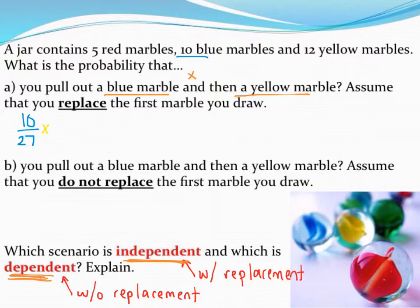I'm going to multiply that by the probability of getting a yellow marble. Well, there's 12 yellow marbles. There are still 27 in the jar because I've replaced everything. So multiplying those two probabilities together will get me the probability of both things happening.